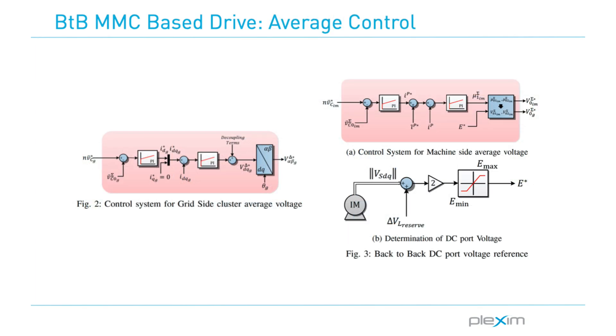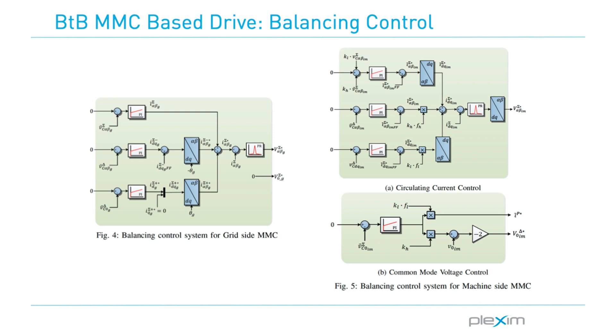The average control system ensures that the total mean capacitor voltage is maintained at the desired reference. It also controls the DC port voltage to improve the dynamic performance of the total system. The balancing control system controls the circulating current and the common mode voltage of the converter and maintains the capacitor voltage fluctuations within an acceptable operation range.